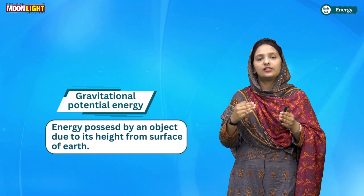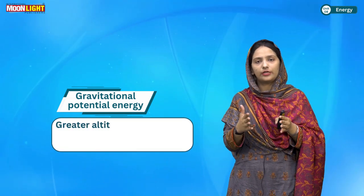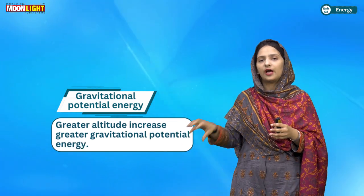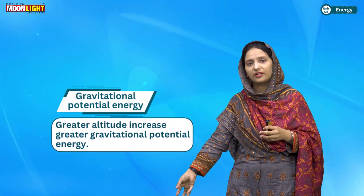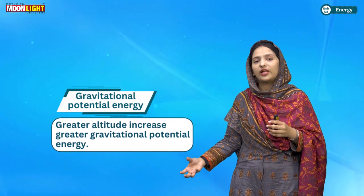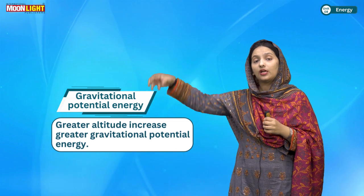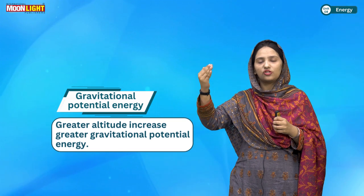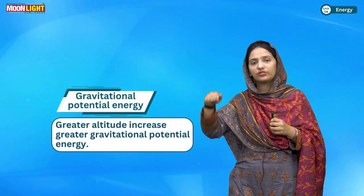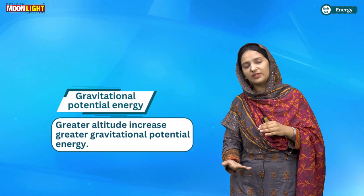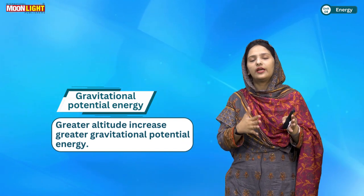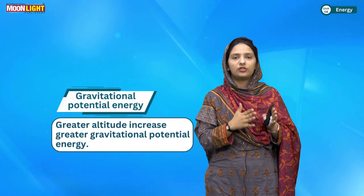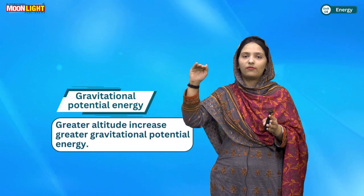The greater the height of a material, the greater its gravitational potential energy. For example, if you take a ball and keep it at a lower height, the gravitational potential energy is not so much. But if you take it to a greater height, the gravitational potential energy will be more. As it goes higher, it increases; as it comes down, it decreases toward ground level.